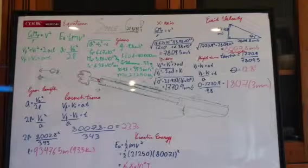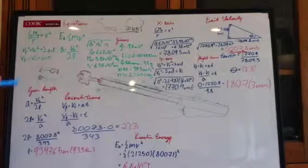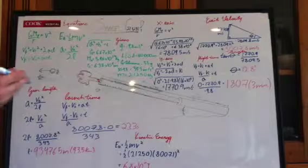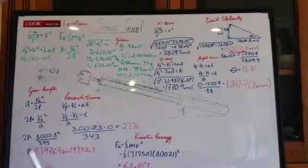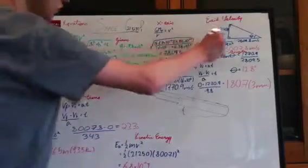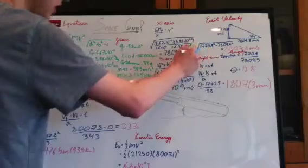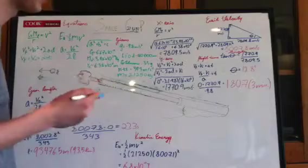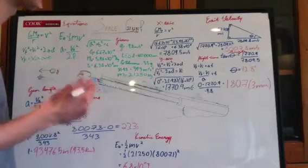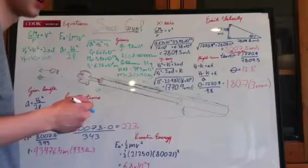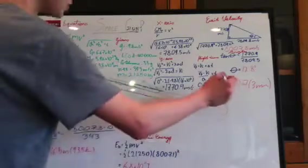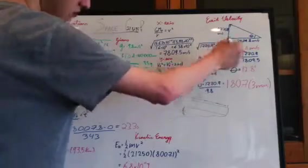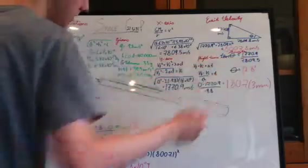Now with both the x and y components, we can create a right triangle and find both the angle and the total velocity of our projectile as it leaves the gun. So we've made a triangle here with our components. We can use the Pythagorean theorem to figure out that our velocity needs to be 8,007.8 meters a second. We can also use trigonometry to figure out what angle our gun needs to be pointed at, which is tan inverse of opposite over adjacent. We're going to end up with 12.8 degrees.